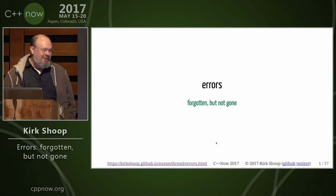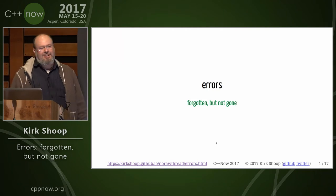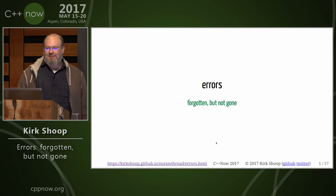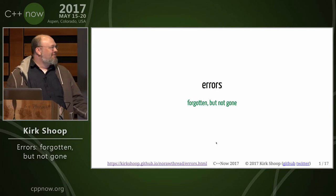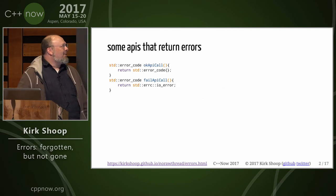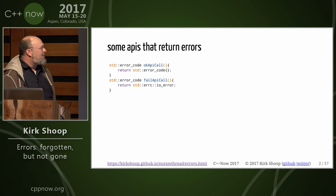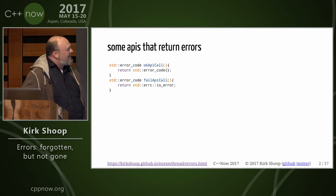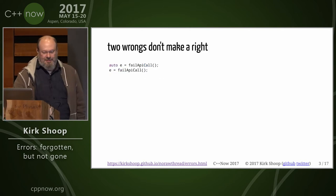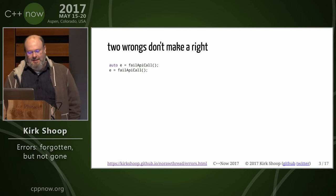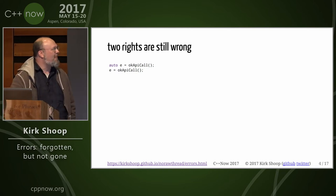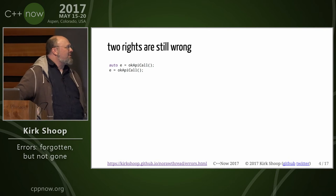How often has anyone here forgotten to check a status value or an error code after it was returned from a function? Yeah, a few of us. So here's a couple of APIs that return errors, and two wrongs don't make a right. And two rights are still wrong. Still should have checked.